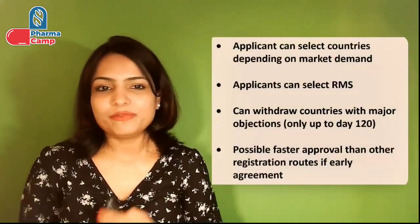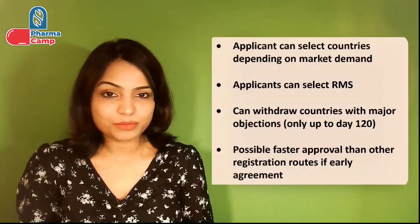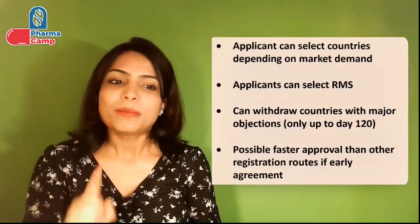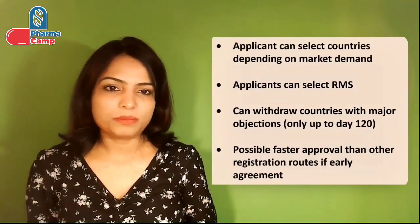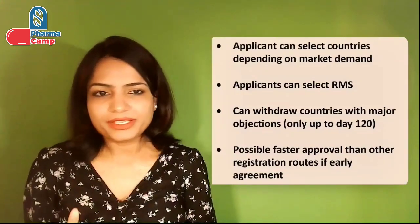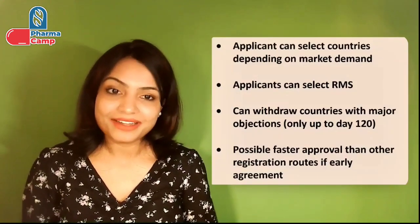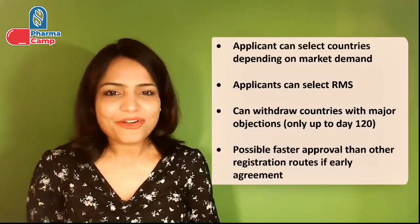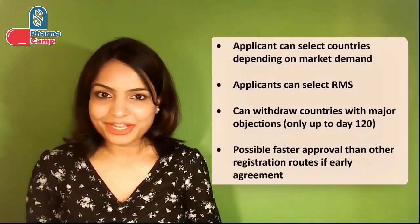The decentralized procedure has several benefits. You can choose which countries to apply in based on market demand. You can select your RMS — unlike the centralized procedure where you cannot choose the rapporteur. You can withdraw countries that raise major objections during the review process, but only up to day 120. If early agreement is reached between CMS and RMS, the decentralized procedure is possibly the fastest registration route compared to other pathways.